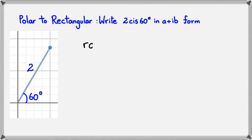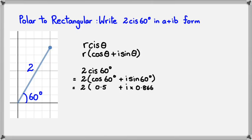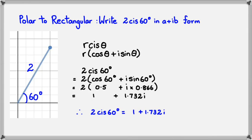We know that R cis theta can be written as R times (cos theta plus i sine theta). So 2 cis 60 degrees equals 2 times (cos 60 plus i sine 60). Cos 60 is 0.5 and sine 60 is 0.866, so this becomes 2 times (0.5 plus 0.866i), which simplifies to 1 plus 1.732i. That's 2 cis 60 degrees in rectangular form.